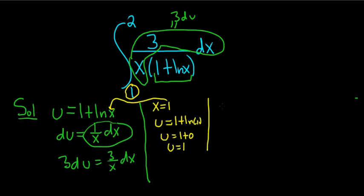Then we have to do the same thing for 2. So x equals 2, that tells us that u equals 1 plus the natural log of 2, and you can't do much with that.